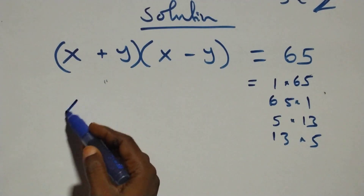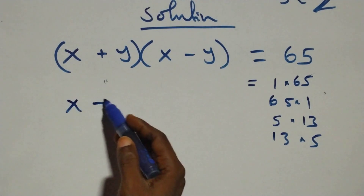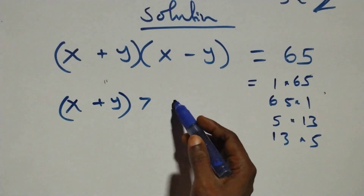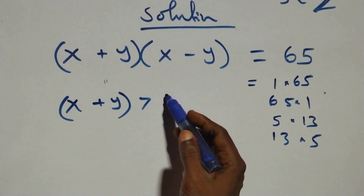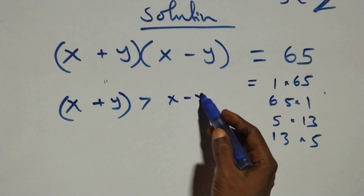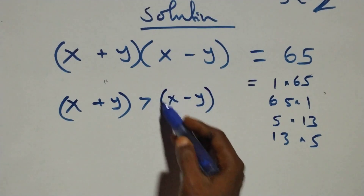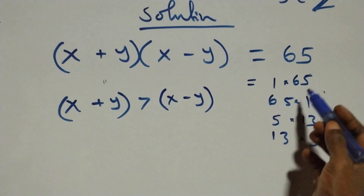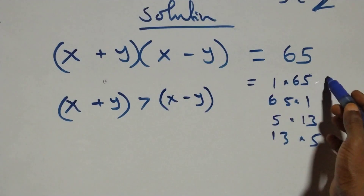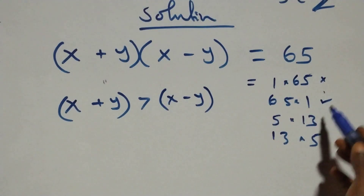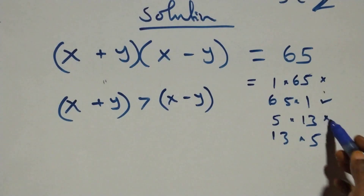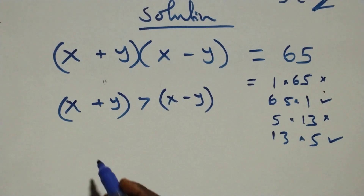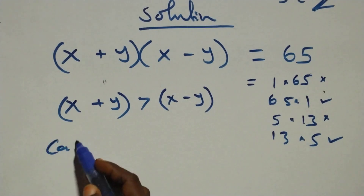The first bracket, which is (x + y), should be greater than the second bracket, which is (x - y). So the first number has to be greater than the second. Therefore, we have two cases.